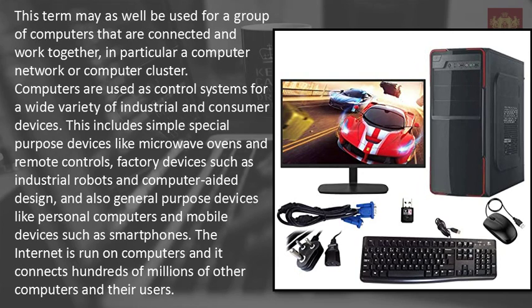This term may also be used for a group of computers that are connected and work together, in particular a computer network or computer cluster. Computers are used as control systems for a wide variety of industrial and consumer devices. This includes simple special purpose devices like microwave ovens and remote controls, factory devices such as industrial robots and computer-aided design, and general purpose devices like personal computers and mobile devices such as smartphones. The internet is run on computers and it connects hundreds of millions of other computers and their users.